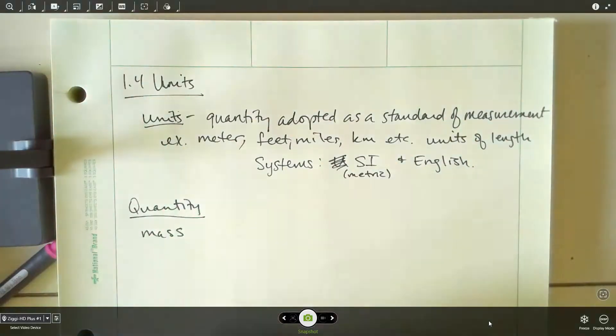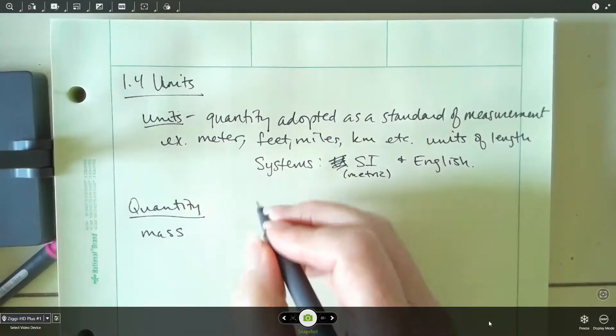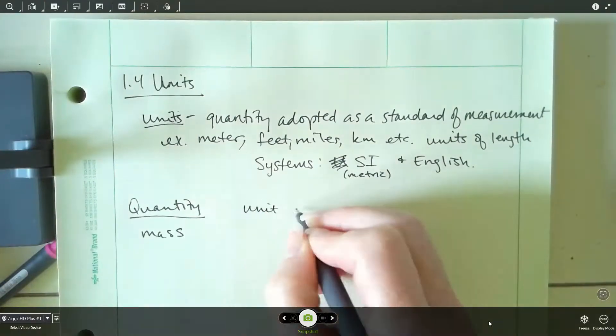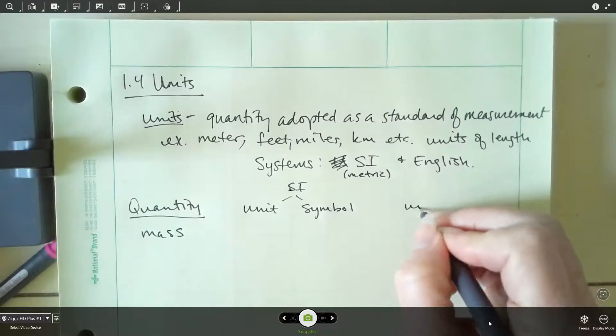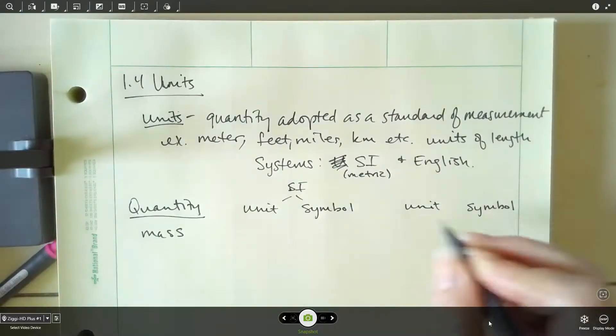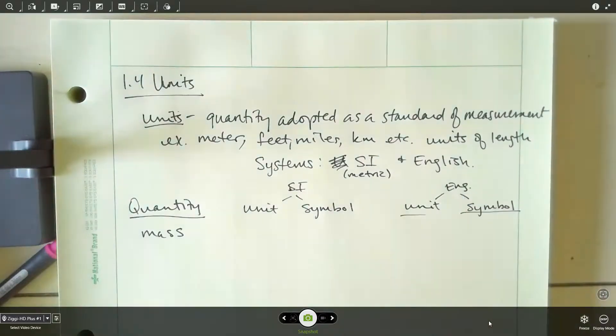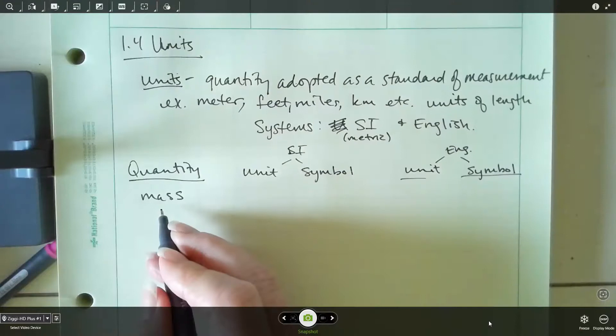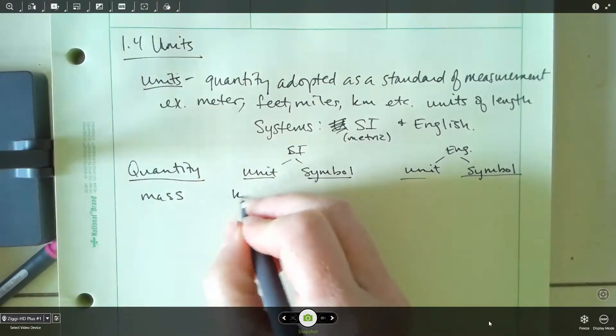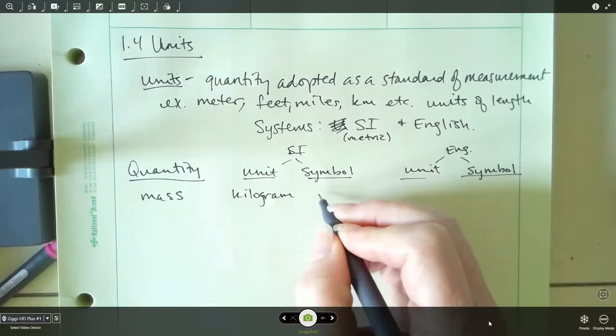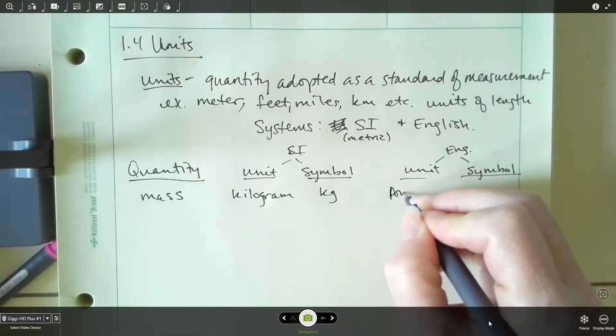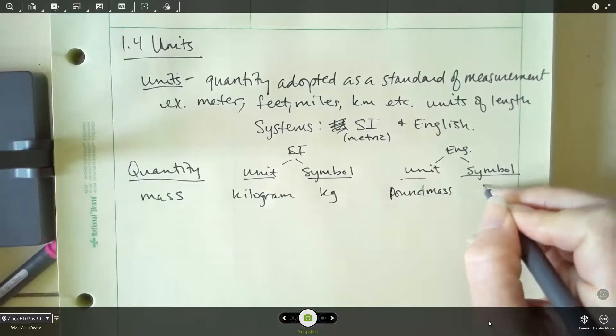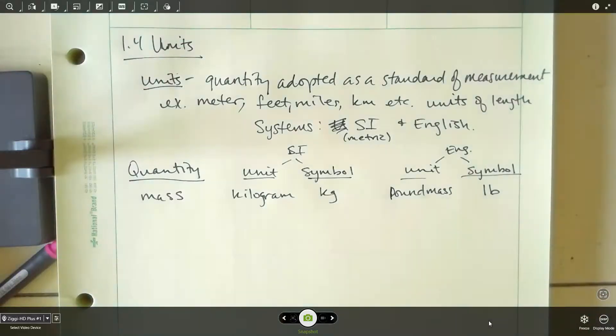So let's make this table. First column is going to be quantity, and our first quantity will be mass. After that, let's have a column for unit, and then next to that put symbol. And these are going to be for the SI system. And then after that, do another column for unit, and another one for symbol. These will be for the English system. So if we're talking about mass, our unit in the SI system is going to be the kilogram. And I think everybody probably knows the symbol is kg. And then for the English system, the unit is going to be pound mass. And the symbol that we're going to use in here is just LB.